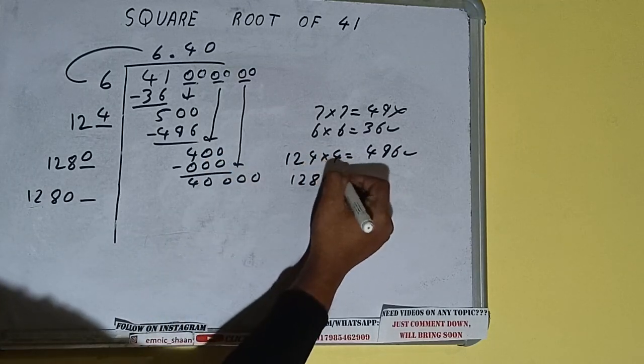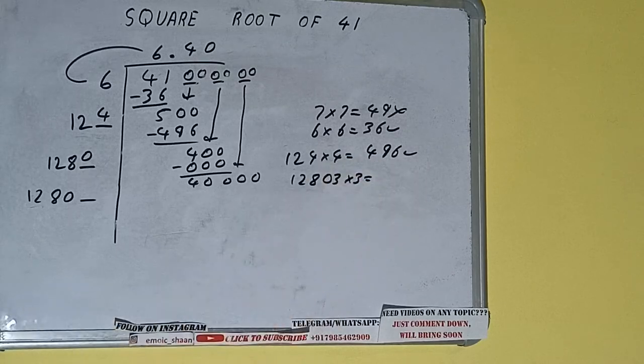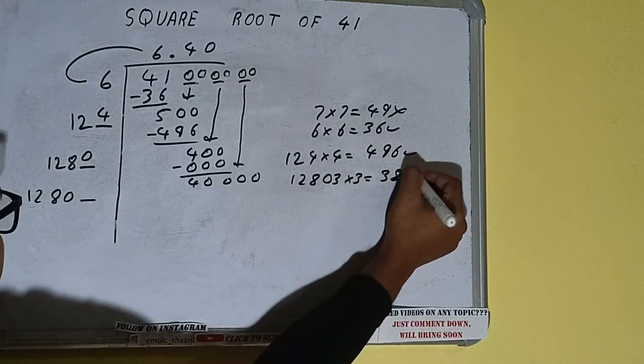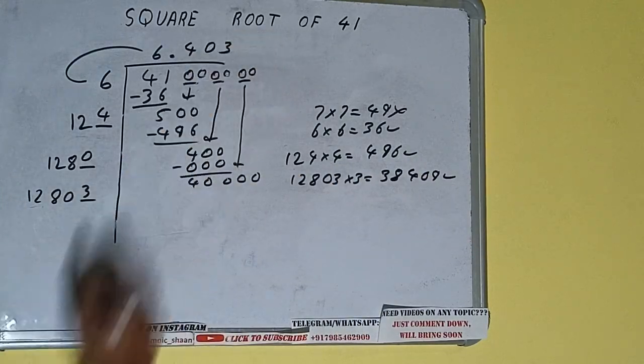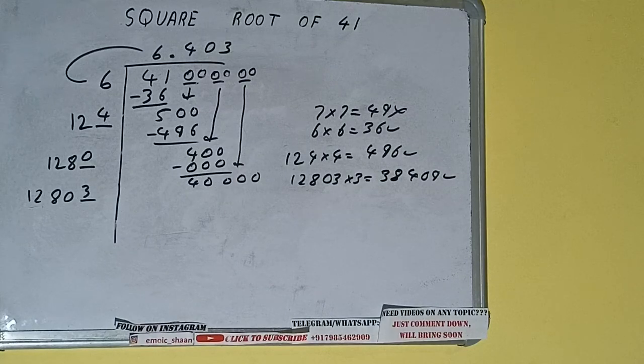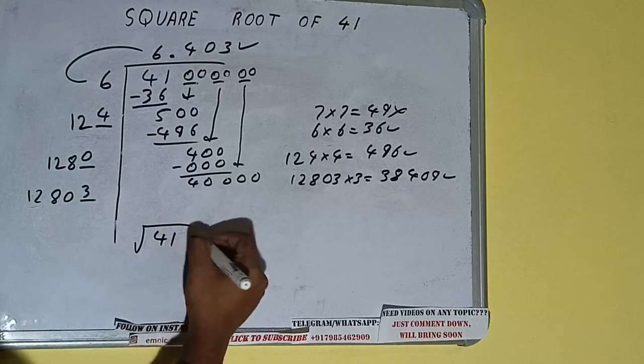1280, 3 into 3. We'll be having 38,409, which is good to take. So 3 here and 3 here. But we don't need to calculate because we got the answer up to 3 decimal places. So square root of 41 will be 6.403.